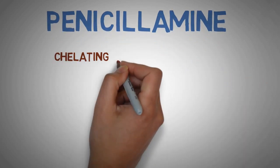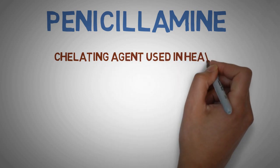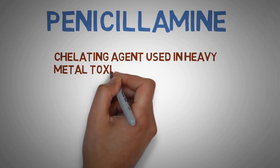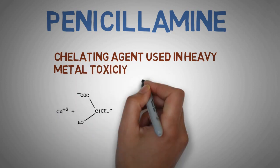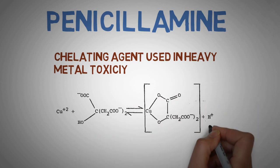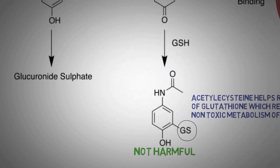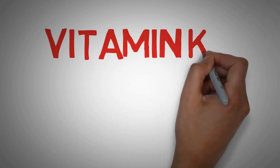Number two: penicillamine. Penicillamine is a chelating agent used in heavy metal toxicity, especially copper toxicity in Wilson's disease, which is a disease that prevents copper metabolism. Two penicillamine atoms bind with every copper atom, forming a very hydrophilic compound which is readily excreted in the urine.